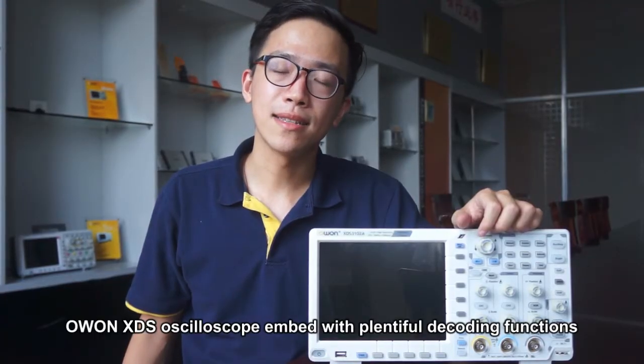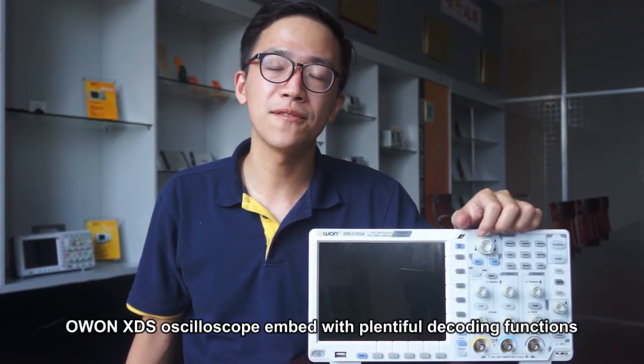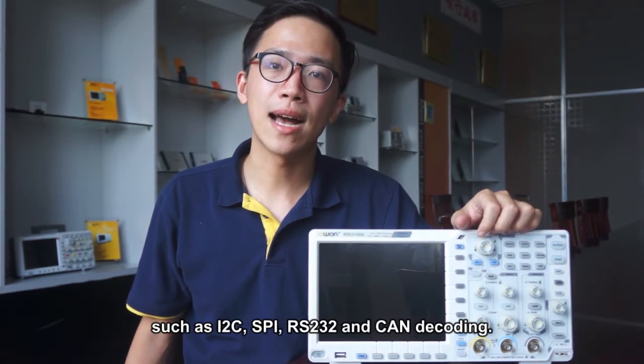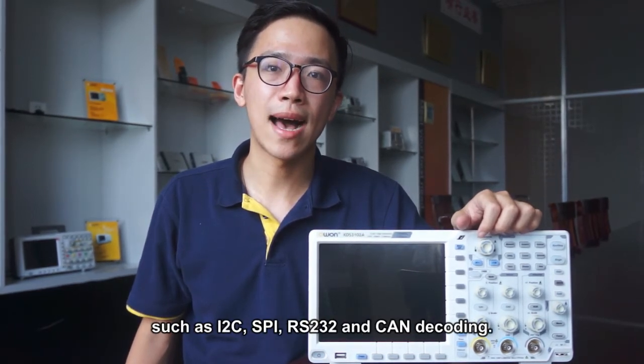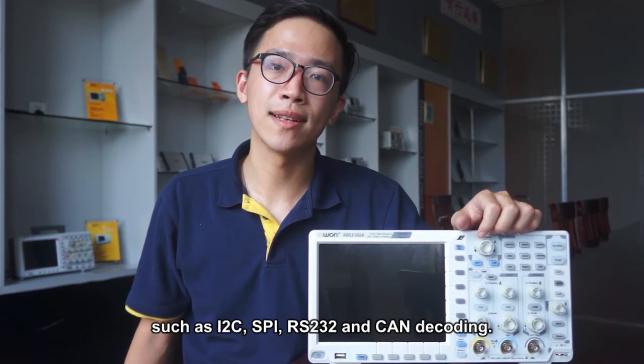OWON XDS oscilloscope inbound with 24 decoding functions such as I2C, SPI, RS232 and CAN decoding.